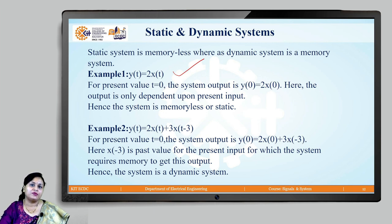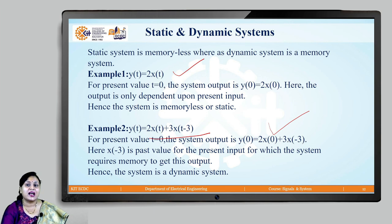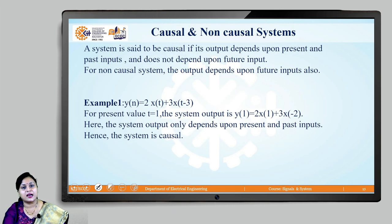In the second example, y(t) = 2x(t) + 3x(t-3). If we assume the present value t = 0, we compute y(0) = 2x(0) + 3x(-3). Here x(-3) depicts a past value for the present input at t = 0. Thus, this system requires a memory to get its output and such a system is called a dynamic system.